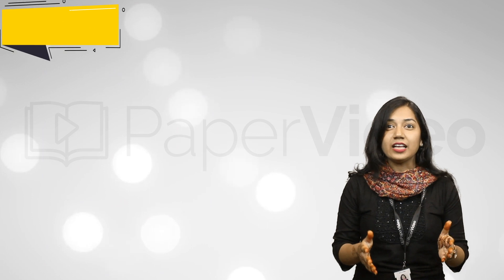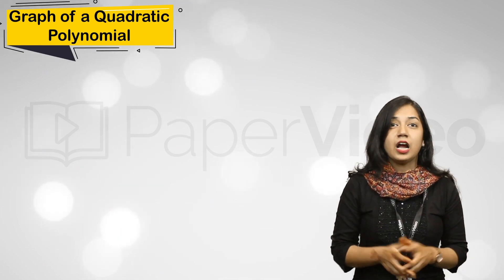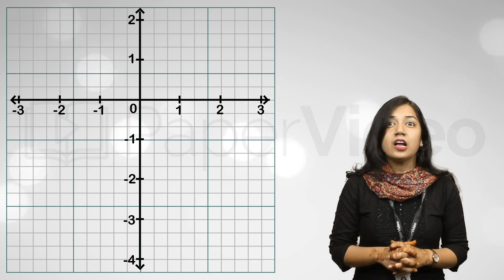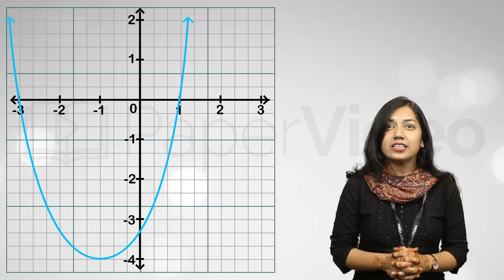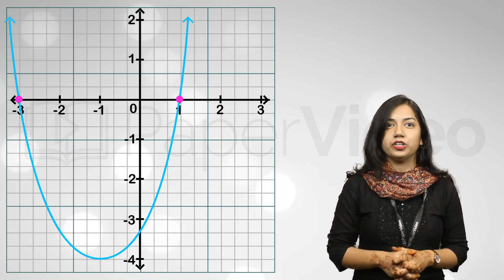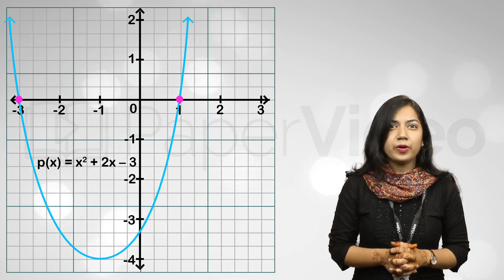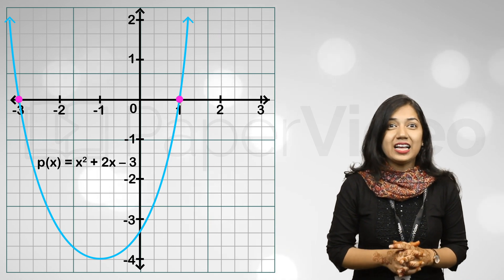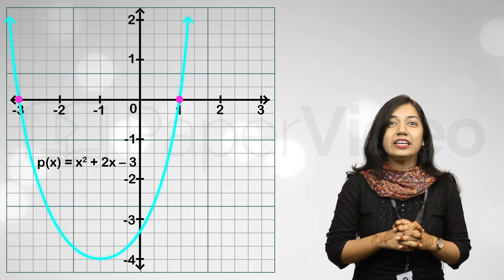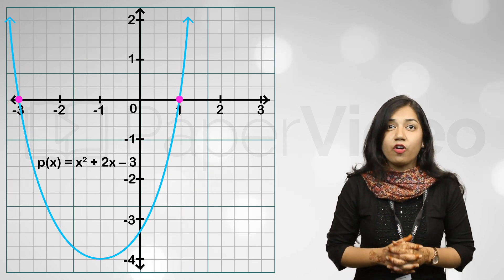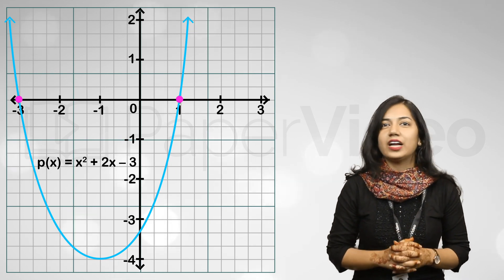Let us now understand the graph of a quadratic polynomial. A quadratic polynomial has degree 2. This means that the graph of a quadratic polynomial will be a parabola which intersects the x-axis two times. For instance, this is a graph of quadratic polynomial p(x) = x² + 2x − 3. Clearly, we can see that the graph is a parabola and it intersects the x-axis at two points. Such type of graphs are the general graph of a quadratic polynomial.